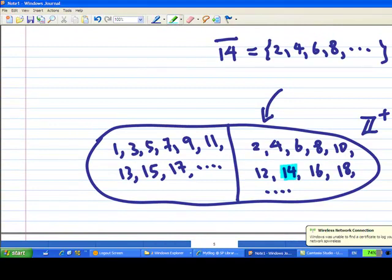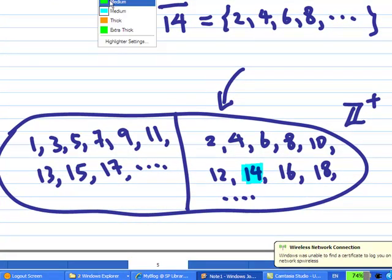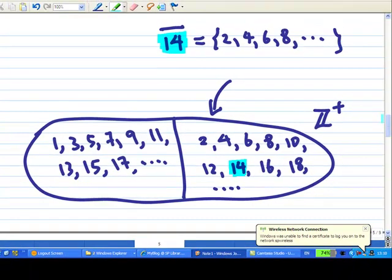Now, how do we name the cell? For example, the cell contains 14. Then we will write a bar on top of 14 to represent the cell containing 14. And they are consisting of the elements 2, 4, 6, 8, 10, 12, 14, 16, 18 and so on.